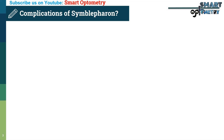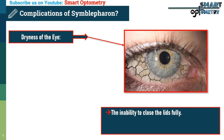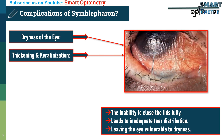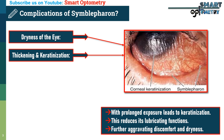What are the complications of Symbolpheron? 1. Dryness of the eye: the inability to close the lids fully leads to inadequate tear distribution, leaving the eye vulnerable to dryness. 2. Thickening and keratinization: with prolonged exposure, the conjunctiva undergoes thickening and keratinization. This transformation reduces its protective and lubricating functions, further aggravating discomfort and dryness.